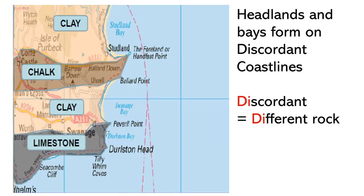Headlands and bays form on coastlines where there are different kinds of rock. Looking at this Ordnance Survey map, the rock type — the geology — has three different types: clay in the lighter color, and chalk and limestone in the darker brown and gray. They are of different strengths; clay is a very soft rock while chalk is a very hard rock. This is called a discordant coastline. Note the 'di' for different and the 'di' for discordant — just to help you remember.